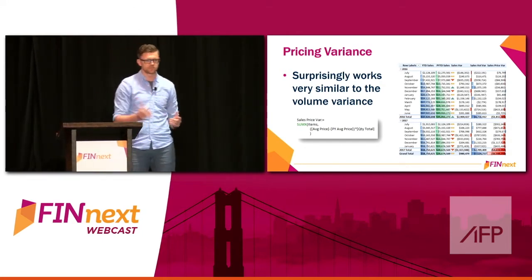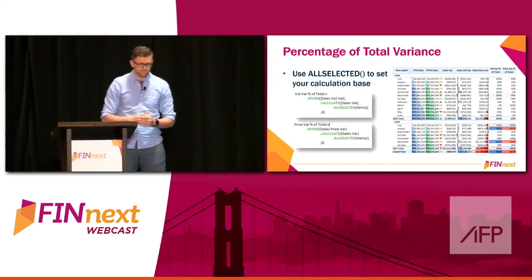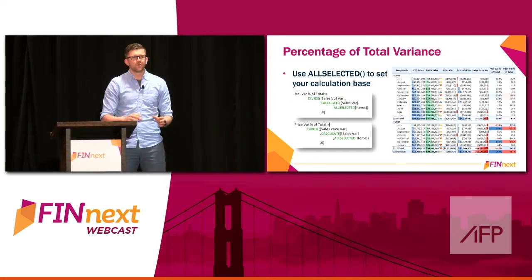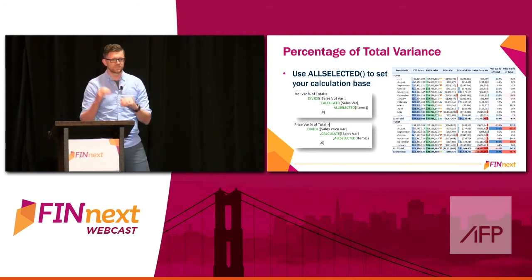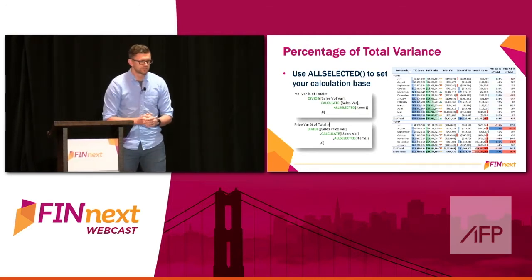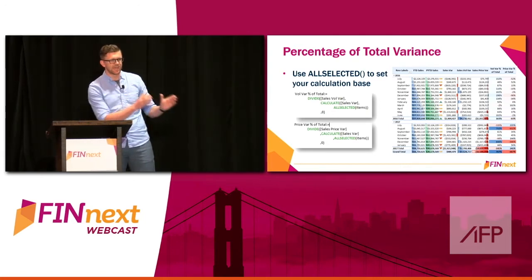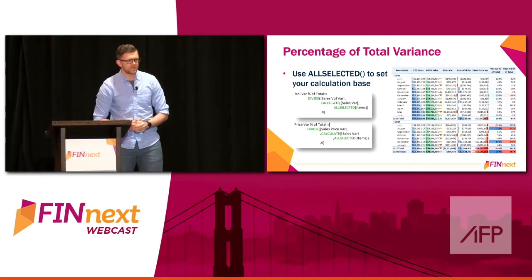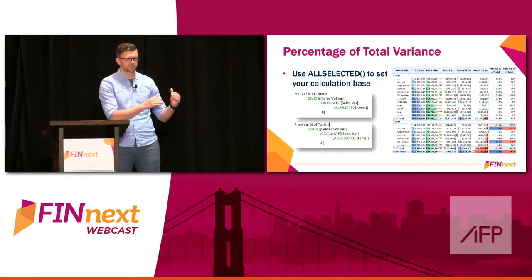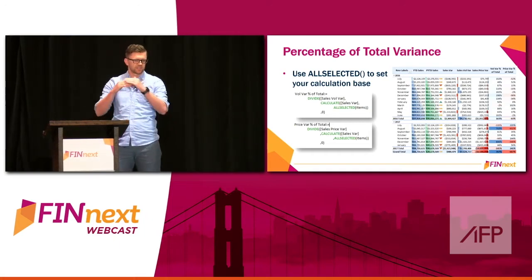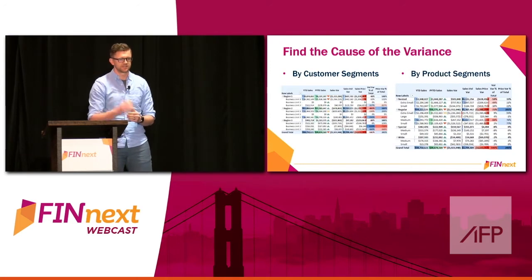This could also be done with a budget; I'm using previous year here. But I want to see that variance as a percentage of my total so I can really do some comparisons. I can use an ALL filter within DAX, which will allow me to set up a base for that calculation so I can take my volume variance over the entire sales variance and see what percentage it makes up.